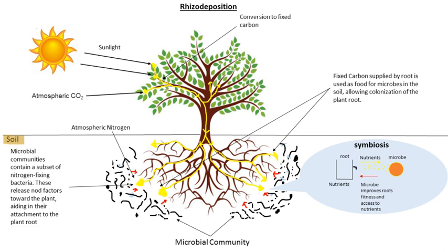Different parts of the root are associated with different microbial communities. For example, fine roots, root tips, and the main root are all associated with different communities, likely due to the unique chemistry and nutrient status of each of these regions. Additionally, different plant species, and even different cultivars, harbor different microbial communities, probably due to host-specific immune responses and differences in carbon root exudates. Host age affects root microbial community composition, likely for similar reasons as host identity.